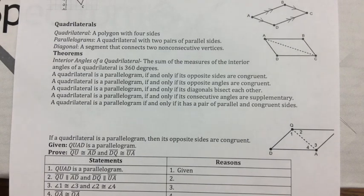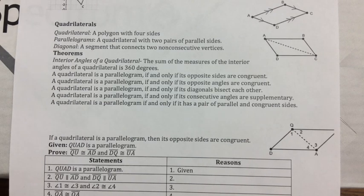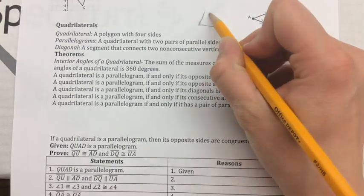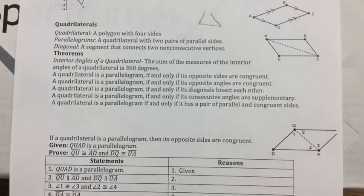We're going to start by talking about polygons. Polygons are shapes that have many sides. When you're making a polygon, all of the side lengths are straight — they can't be curved. It also has to be a closed shape, meaning that you can't have a side length that's left open. So something that's open like that would not be a polygon. And that's what we need to know for what we're doing right now.